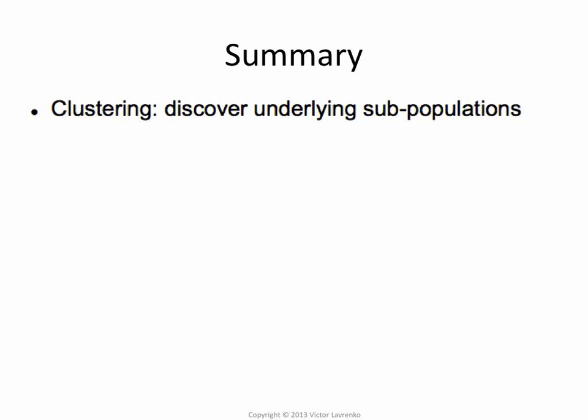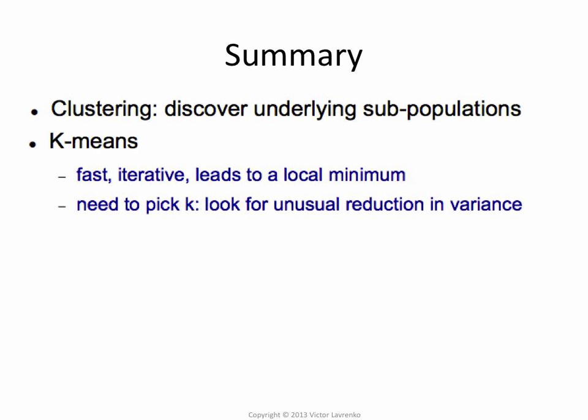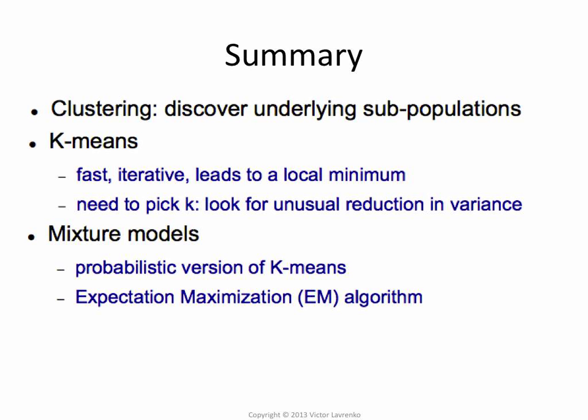All right, so let's summarize where we are. We're talking about clustering, so our goal is identifying subpopulations in the data. We talked about k-means — it's a fast algorithm, so this is something that you use if you have lots of data. It's iterative, it does lead to a local minimum, so you need to restart it from random points if you want the optimum. And you do need to pick k, and we had a few ways for picking k if you wanted to.